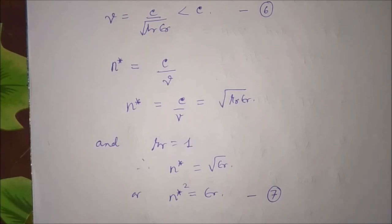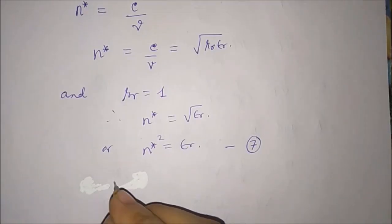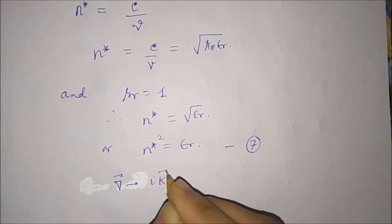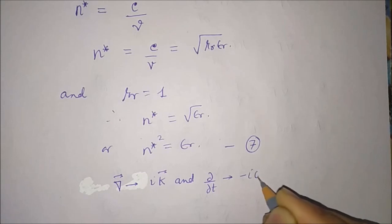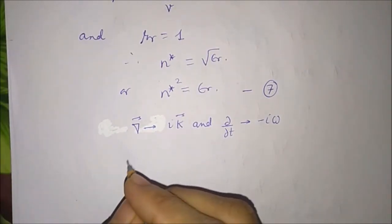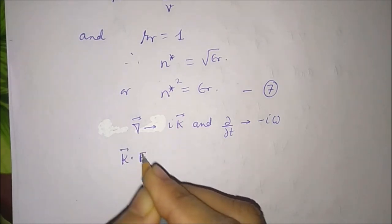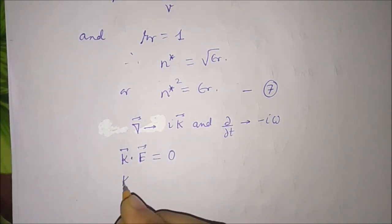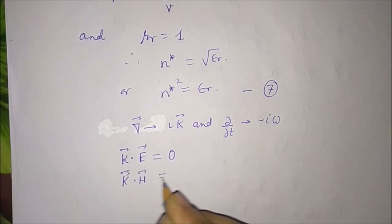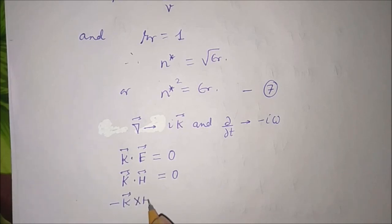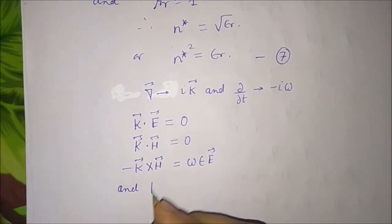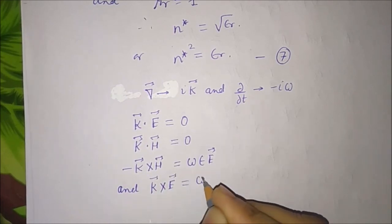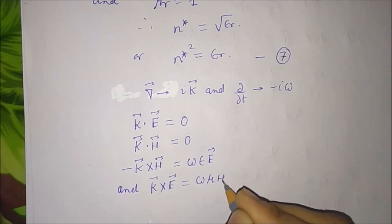Writing del equal to ik and ∂/∂t equal to minus i omega, Maxwell's equations can be written as: k dot E equal to zero, k dot H equal to zero, minus k cross H equal to omega epsilon E, and k cross E equal to omega mu H.